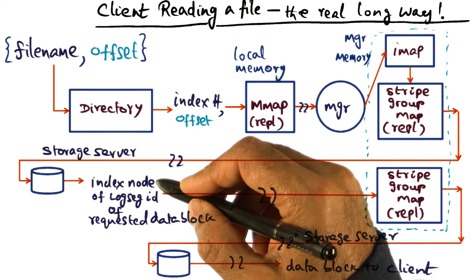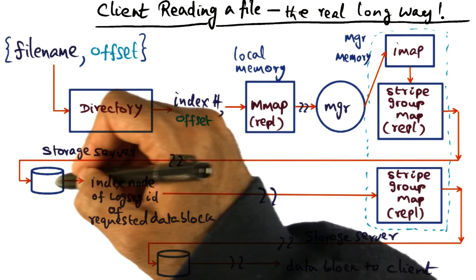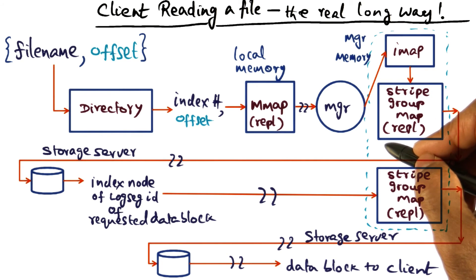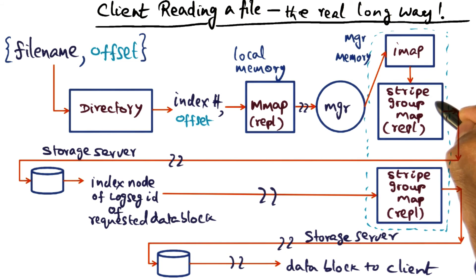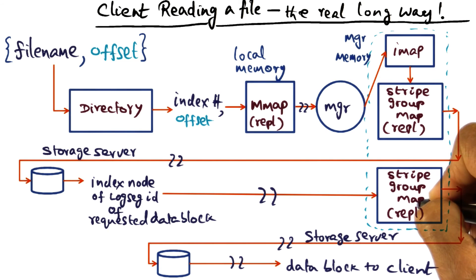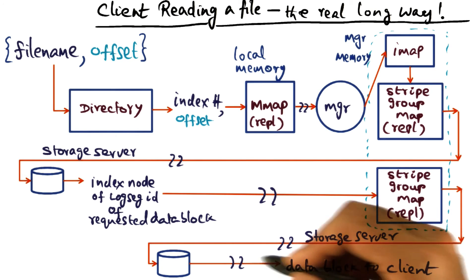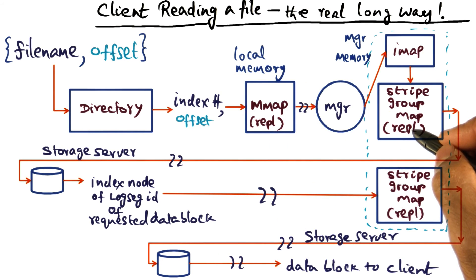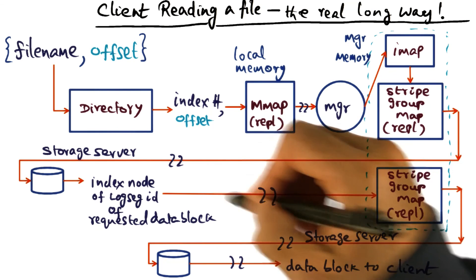It is possible that the index node for the log segment ID associated with this file has been previously accessed by this manager, in which case it doesn't have to go to the storage server to get the index node for the log segment, because it will be present in the manager's memory as part of its caching strategy. Therefore, it can bypass those two network hops — directly from the stripe group map, it can figure out what the log segment ID is locally cached, and then determine where on the disk the data blocks for that log segment are stored. So if this log segment has been accessed before by this manager, it will be in the manager's memory and we can avoid those two network hops.